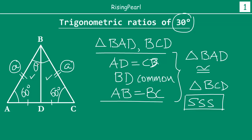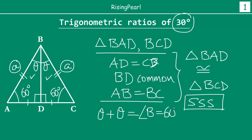Since the triangles are congruent, corresponding angles are equal. So the angle at B in triangle BAD and the angle at B in triangle BCD are equal — if each is theta, then theta plus theta equals angle B. But angle B is 60 degrees because this is an equilateral triangle. So two times theta equals 60 degrees, which implies theta equals 30 degrees. That is the reason we started with an equilateral triangle — we have found one angle that is 30 degrees.